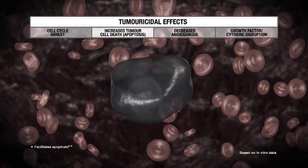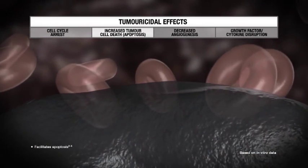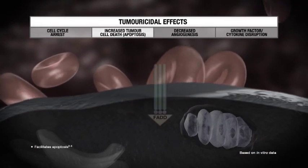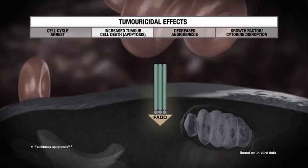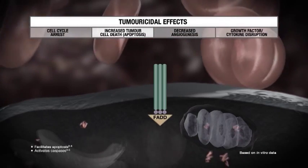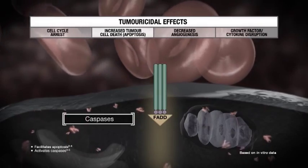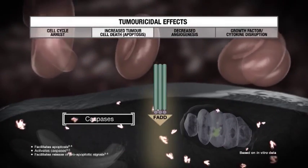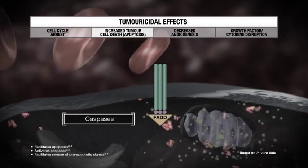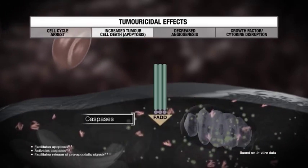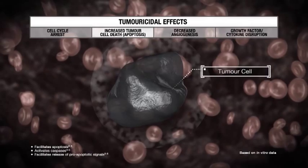Revlimid also works to increase tumour cell death by increasing the sensitivity of tumour cells to factors that stimulate apoptosis. It activates the effector proteins of apoptosis, called caspases, and facilitates the release of pro-apoptotic signals, such as cytochrome C, inside the cell. Together, these changes increase tumour cell death.